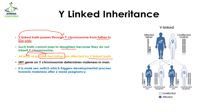For example, SRY is a gene which is present on the Y chromosome and it determines maleness in men. Maleness is actually a male sex switch which triggers the developmental processes towards maleness after six weeks of pregnancy.